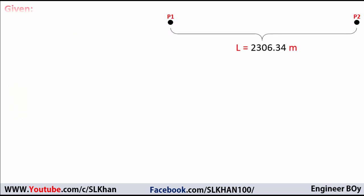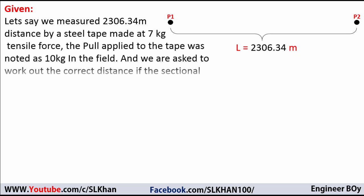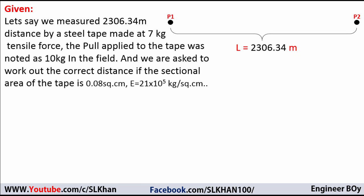L equals the measured length, which can be in meters. Let's say we measure a distance of 2306.34 meters by a steel tape made at 7 kg tensile force. The pull applied to the tape in the field was noted as 10 kg, and we are asked to work out the correct distance if the cross-sectional area of the tape is 0.08 square centimeters.